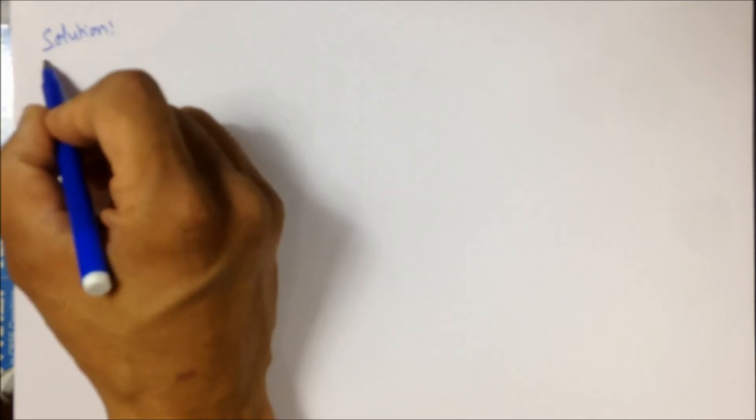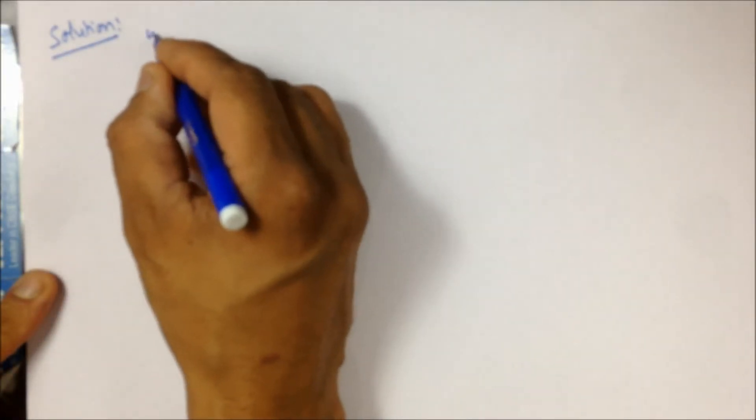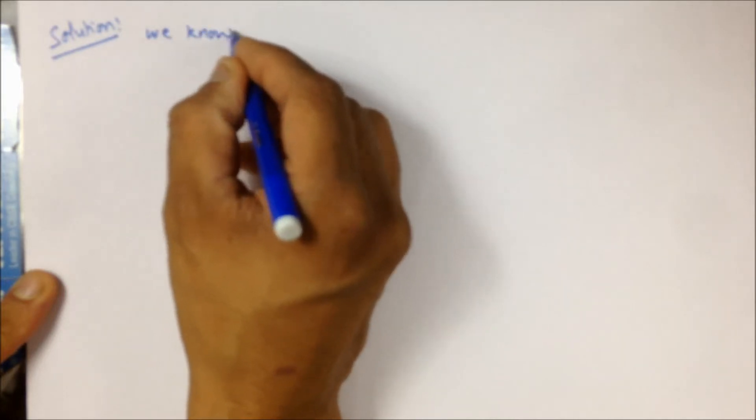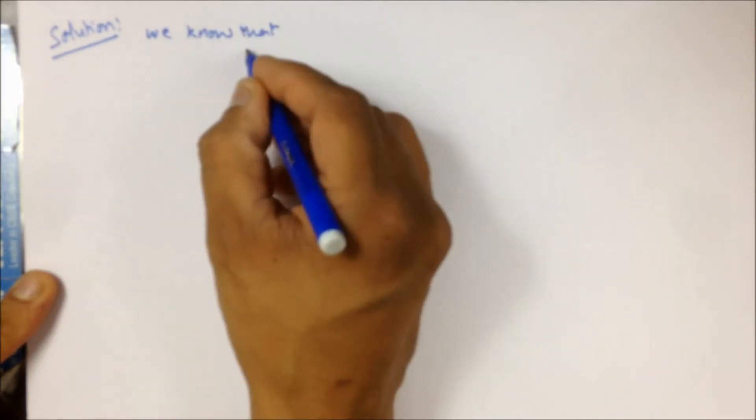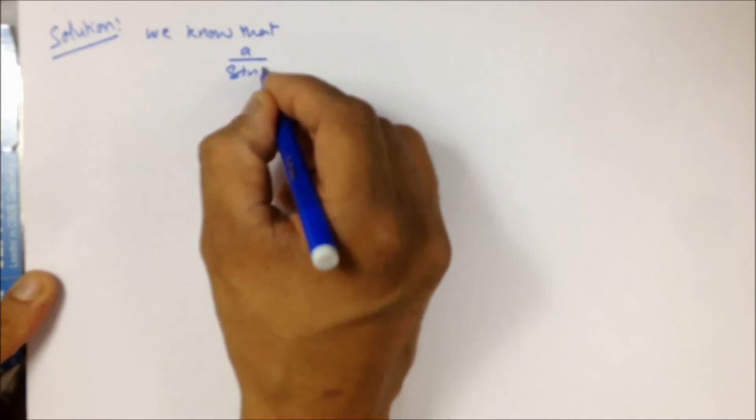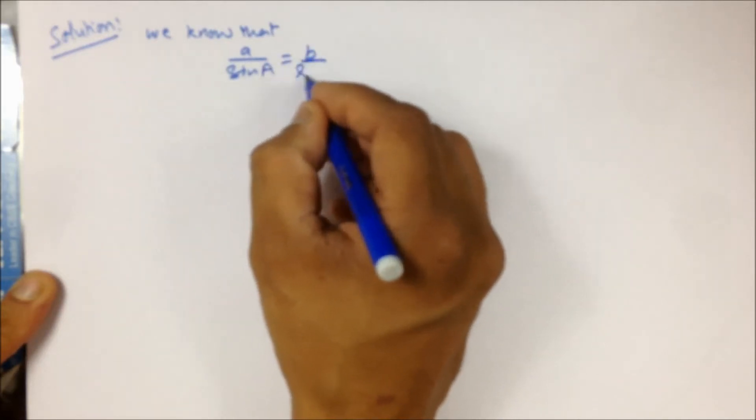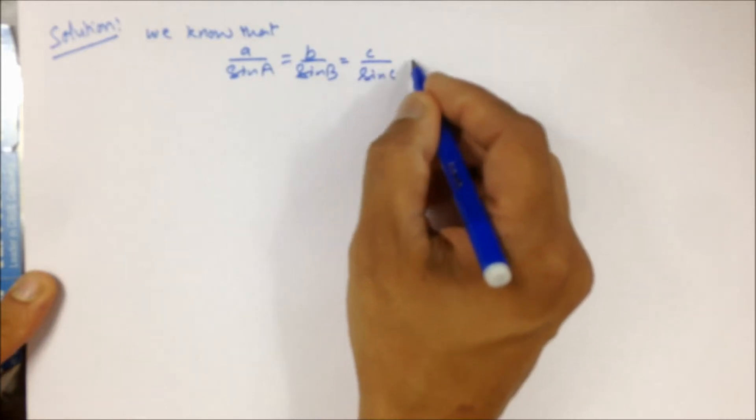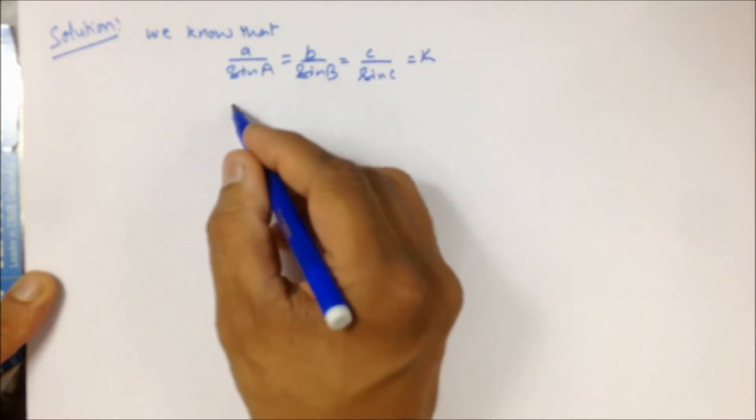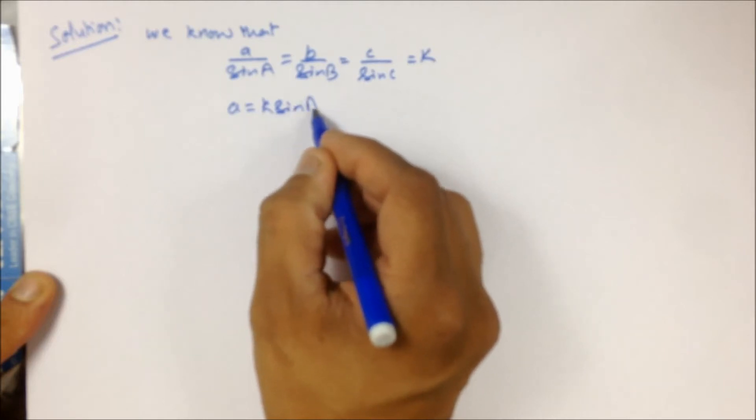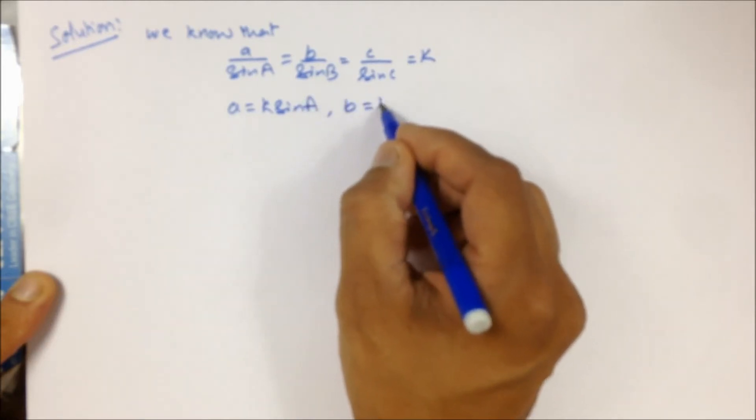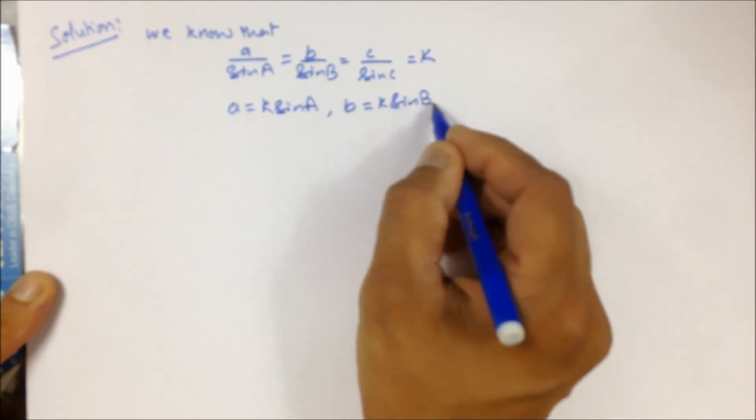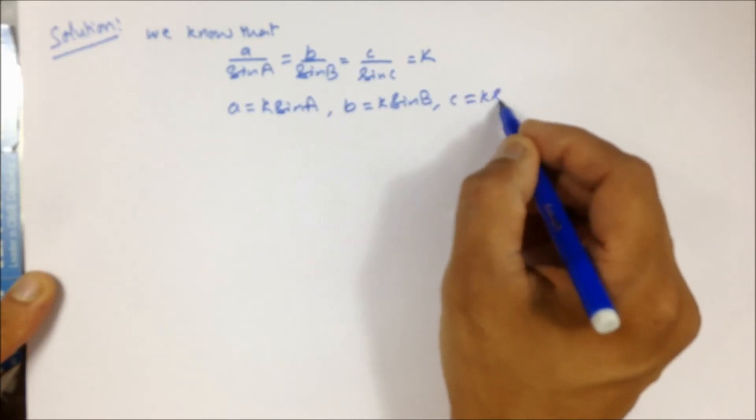Welcome to the solution. Initially we'll write the sine law. We all know that a/sin(A) = b/sin(B) = c/sin(C) = k. So a = k·sin(A), b = k·sin(B), and c = k·sin(C).